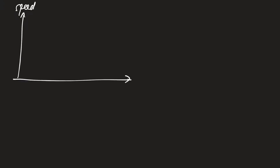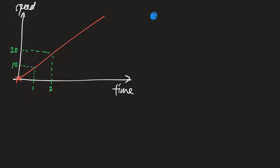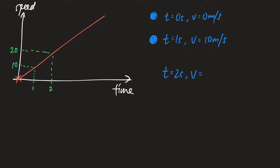Now let's take a look at the speed-time curve. This is the speed against time graph, and the graph will start from the origin because at time equals zero — the moment you release the object — the speed is zero. It will then be a straight line with a constant gradient. In one second the speed will be 10 m/s, and at two seconds the speed will increase by another 10, making it 20 m/s.